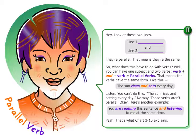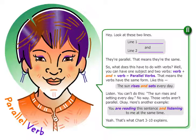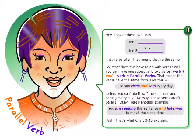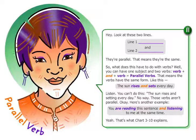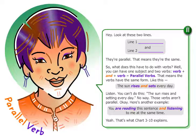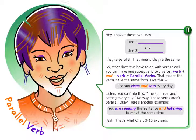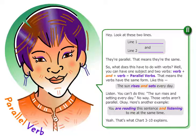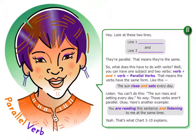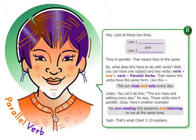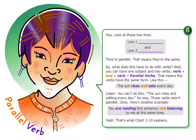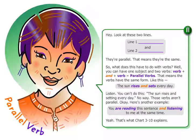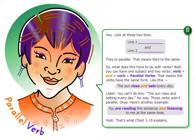Hey, look at these two lines — line one and line two. They're parallel, that means they're the same. So what does this have to do with verbs? Well, you can have one subject and two verbs: verb plus and plus verb equals parallel verbs.